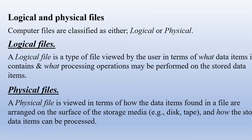Computer files are classified as either logical or physical. A logical file is viewed by the user in terms of what data items it contains and what processing operations may be performed on the stored data items. A physical file is viewed in terms of how the data items found in a file are arranged on the storage media surface and how stored data items can be processed. The key distinction is: logical = what; physical = how.